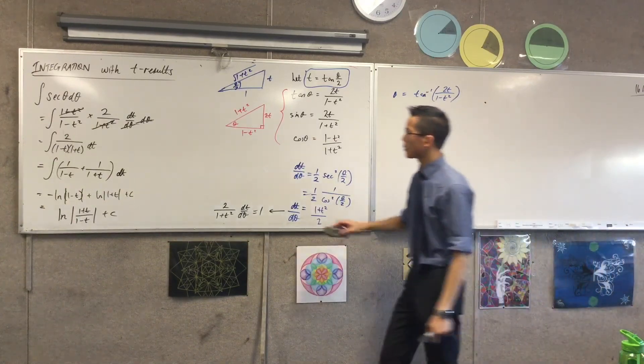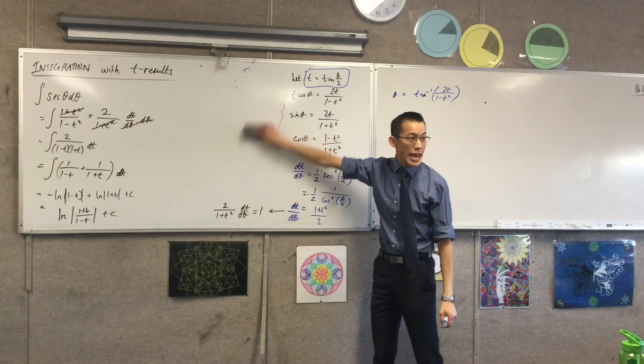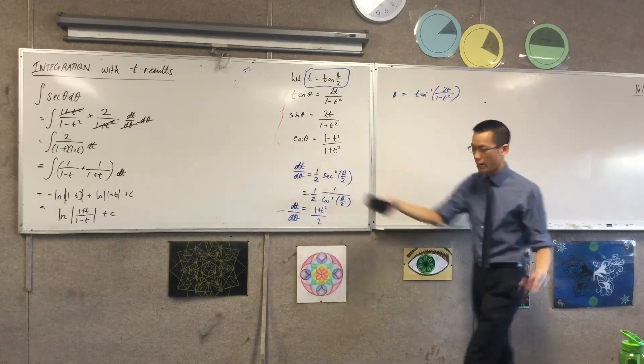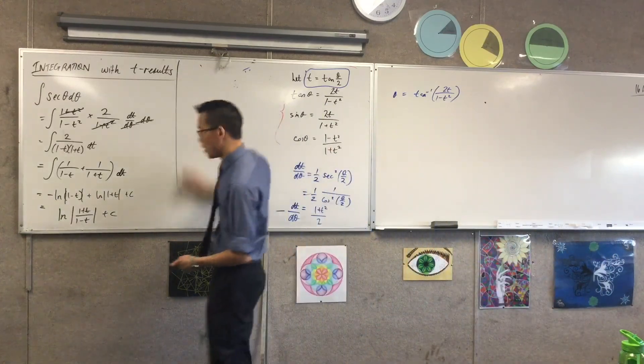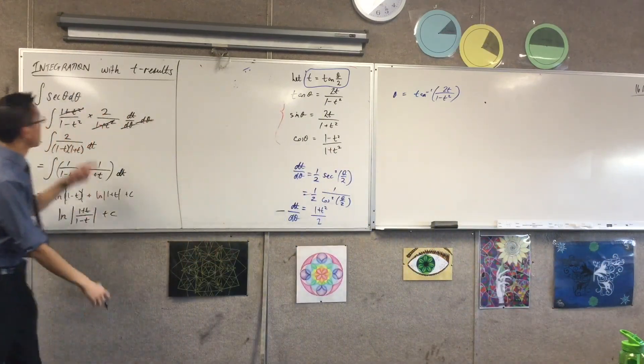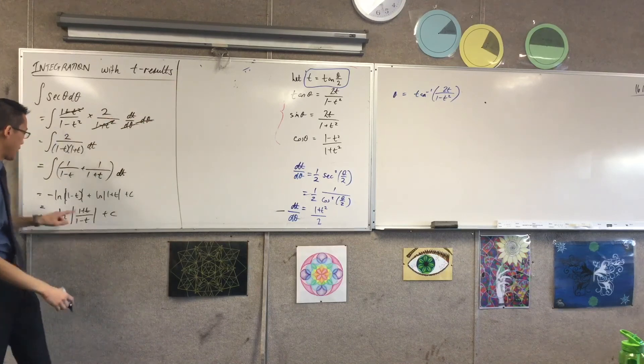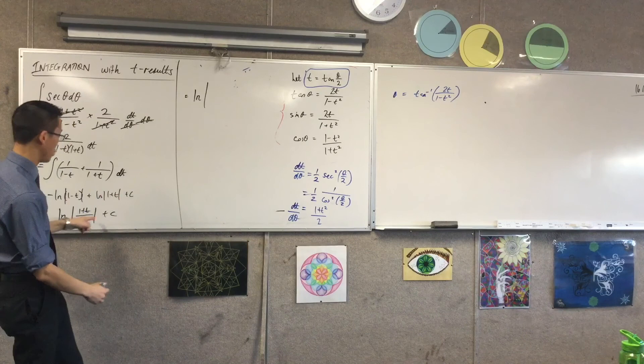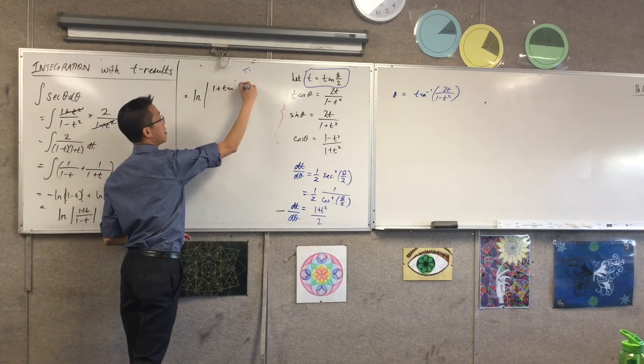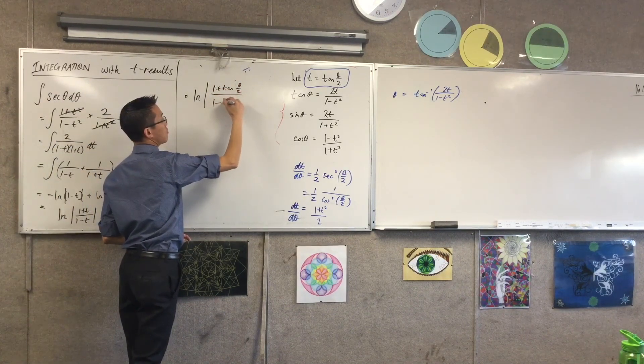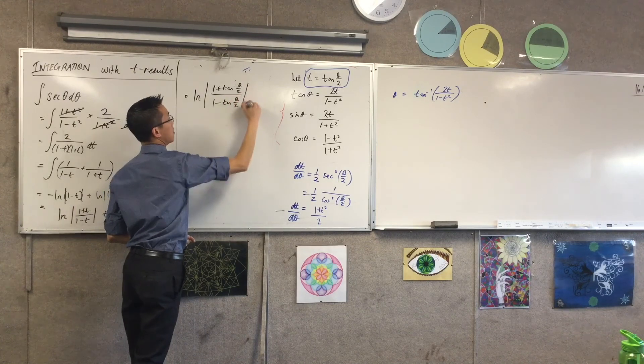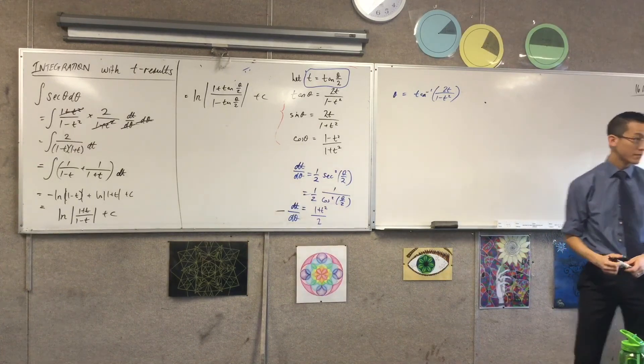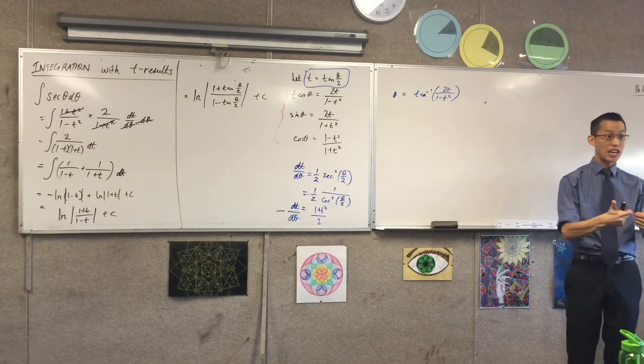Now at this point, I'm going to keep it on the left-hand board. I am almost there. I introduced t in order to make the integration handleable, but now that I have done the integration, I'm going to get rid of it now. So I'm going to say this is equal to log of absolute value, and I'm just going to do the substitutions, which is tan(θ/2). What do you think? How does it look? Did you get it?